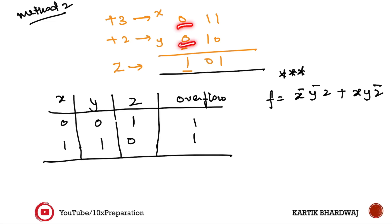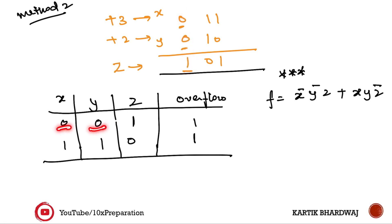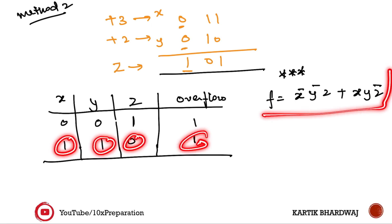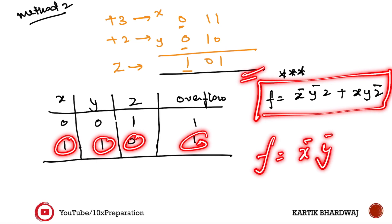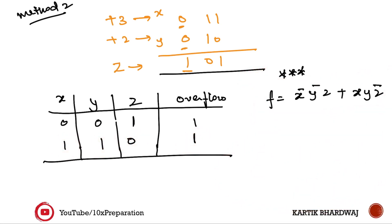There is another method to detect overflow. Let X and Y be the most significant bits of the two input numbers, and Z be the most significant bit of the result. If both X and Y are 0 (both positive) but Z is 1 (result negative), overflow is there. Similarly, if X is 1 and Y is 1 (both negative) but Z is 0 (result positive), overflow is there. The overflow function is F equals X-bar Y-bar Z plus X Y Z-bar.